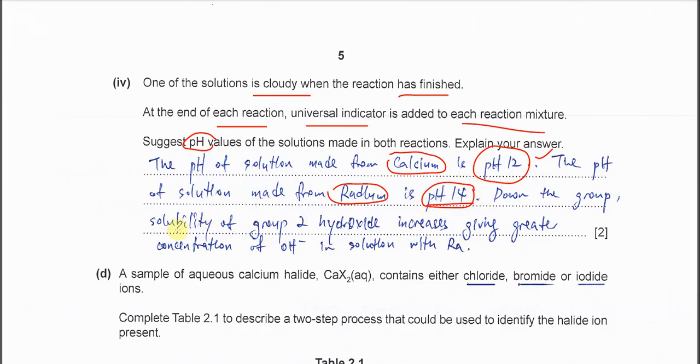Down the group, we know that solubility of Group 2 hydroxide increases. Means calcium hydroxide is less soluble compared to radium hydroxide. Radium hydroxide is kind of almost dissolves completely. When it's dissolved, it will give more hydroxide in the solution. Means the concentration of hydroxide will be greater in the radium hydroxide solution. That's why pH is higher.